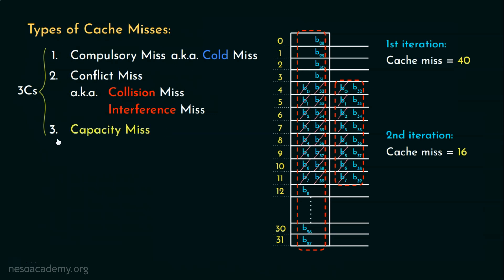Apart from these, few more cache misses are there like coherence misses, coverage misses and system related misses. We will learn about the coherence and the coverage misses in a different session where we will discuss about the cache coherence problems.